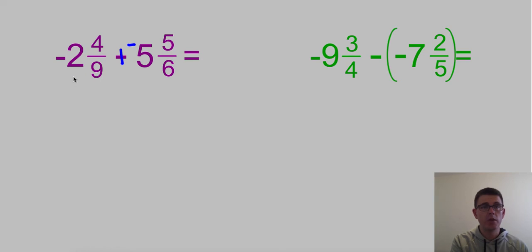That negative is going to go with both the whole number and the fraction part when we deal with them. In this case, they're both negative, so same signs, we're just going to add them together. 4/9 and 5/6. A good common denominator is 18. To get from 9 to 18, I multiply times 2, so we do the same thing up top. To get from 6 to 18, I multiply times 3. So do the same thing to my numerator.